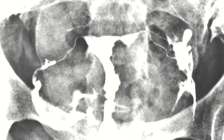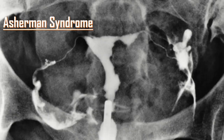On HSG, intrauterine adhesions such as in Asherman syndrome are typically seen as multiple irregular linear filling defects, which may give a lacunar pattern with inability to appropriately distend the endometrial cavity. In severe cases, there can even be complete non-filling of the uterine cavity.